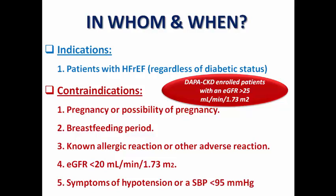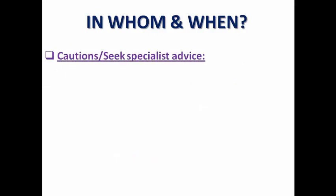It is important to emphasize that in the DAPA-HF trial, they enrolled patients with an estimated GFR of more than 25. That is why the cut-off point for GFR is below 20, at which point it is contraindicated to prescribe SGLT2 inhibitors.